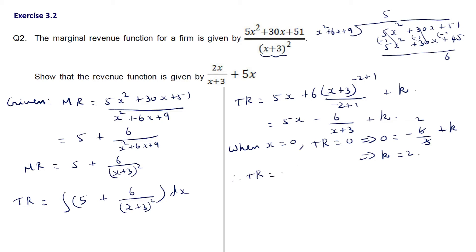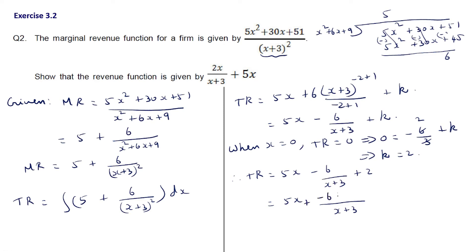Therefore, total revenue = 5x - 6/(x+3) + 2. Leaving 5x as is and simplifying the remaining terms with LCM (x+3): we get (2x+6-6)/(x+3) = 2x/(x+3). So total revenue = 2x/(x+3) + 5x, which is what we were required to prove.